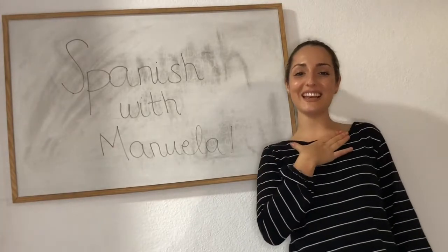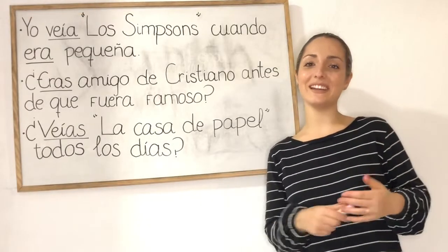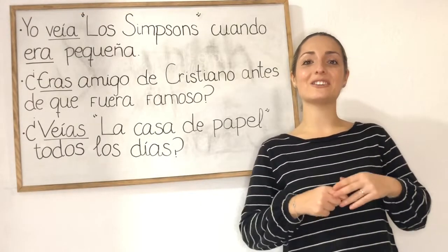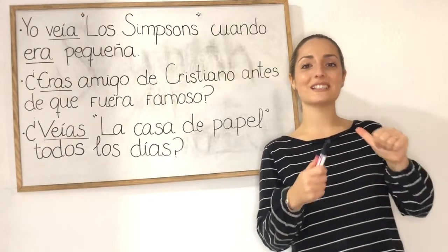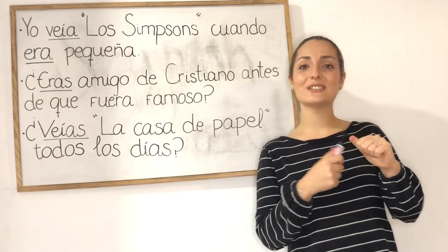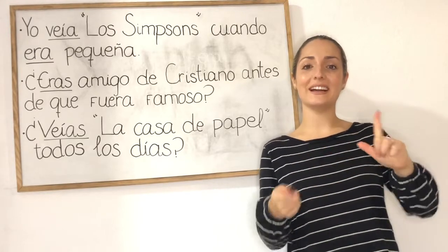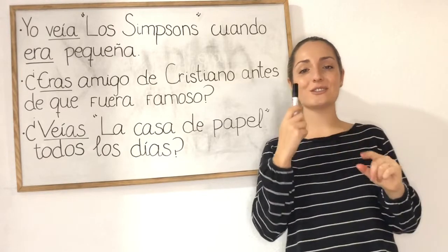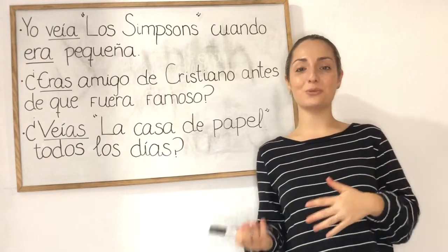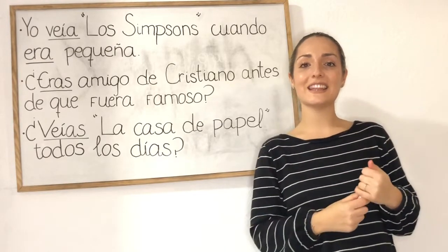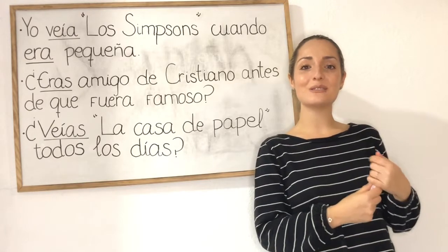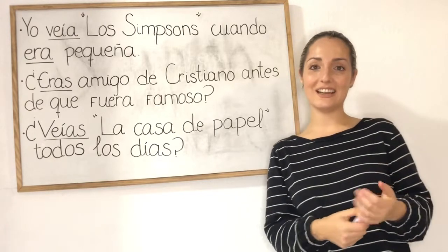Let's start revising our irregular verbs ser, to be, and ver, to see or to watch, in the imperfect preterite.